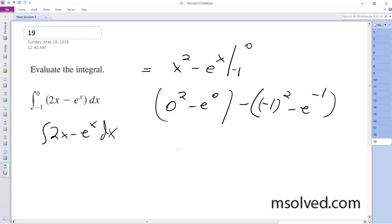So we end up with negative 1 minus the quantity 1 minus 1 over e, which ends up being negative 2 minus 1 over e. Oh, plus, because you distribute the negative sign. This is the solution.